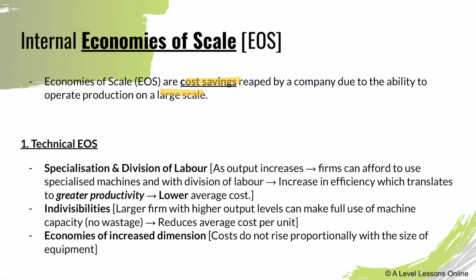There are several types of economies of scale. The first is technical EoS, which refers to specialization and division of labor — getting certain people to specialize in certain production lines. This leads to a higher level of productivity, hence lowering the average cost. The second is indivisibilities: when machines are used to the maximum of their capabilities, it reduces average cost. For example, if you buy a printer that can print 5,000 sheets per minute but only print 10, you're wasting that machine's capability.